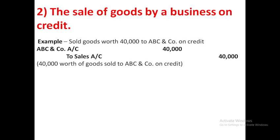We will pass the entry: ABC and Company account debit, because ABC and Company is the receiver. And according to the personal account rule, whoever receives will be debited. And to sales account — what goes out from the business? Goods. And here goods are treated as a sales account.